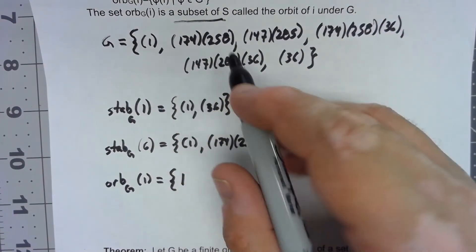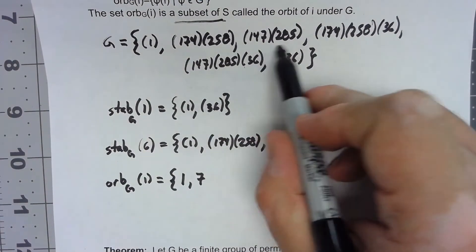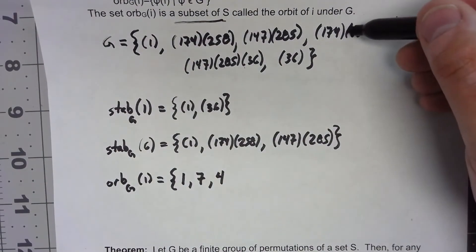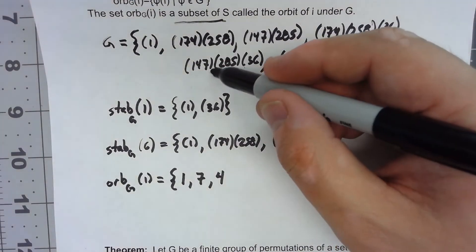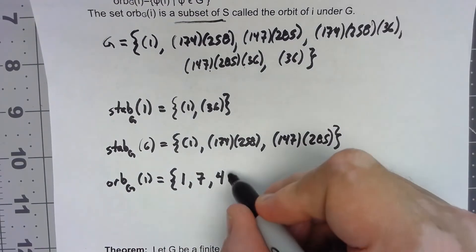Under 174258, one ends up at seven. Under 147285, one ends up at four. Here one ends up at seven. Here one ends up at four. Here one isn't affected, so one ends up at one.